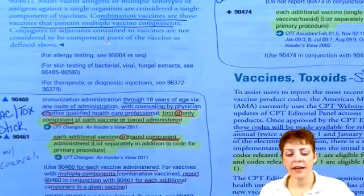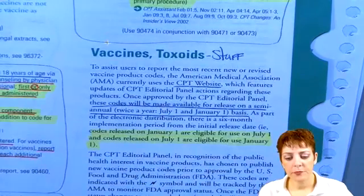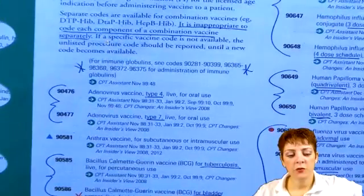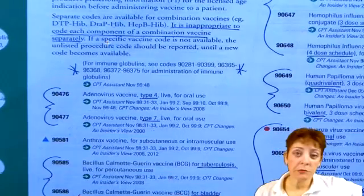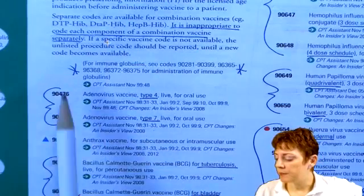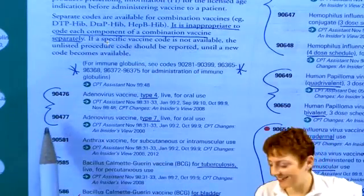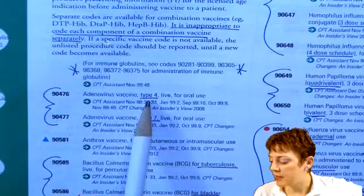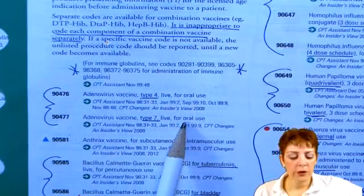What I like to do with the product codes is bracket when they have the same name. So 90476 and 90477 — it's not a true bubble since we only bubble indented codes, so I should call it bubbling, highlighting, and bracketing. These are both adenovirus codes: one is type four, one is type seven, oral use, et cetera. You look at the differences between them.